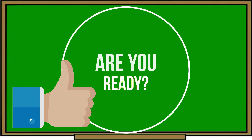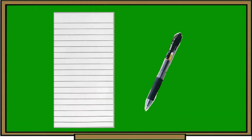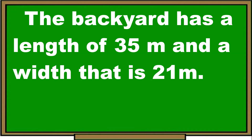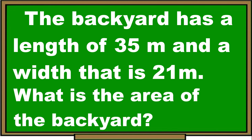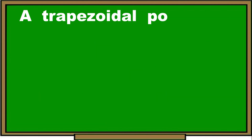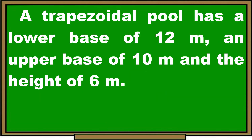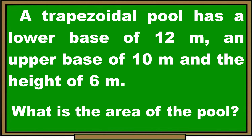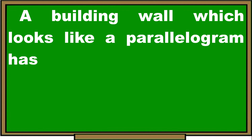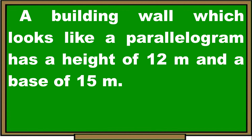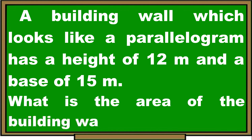Try these exercises. Get a piece of paper and a pen. Analyze and solve the word problems. First: a backyard has a length of 35 meters and a width of 21 meters — what is the area of the backyard? Second: a trapezoidal pool has a lower base of 12 meters, an upper base of 10 meters, and a height of 6 meters — what is the area of the pool? Third: a building wall shaped like a parallelogram has a height of 12 meters and a base of 15 meters — what is the area of the building wall?